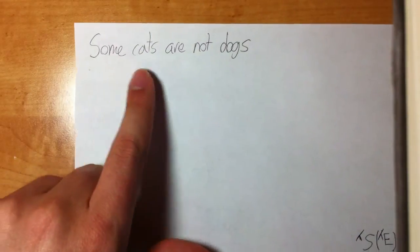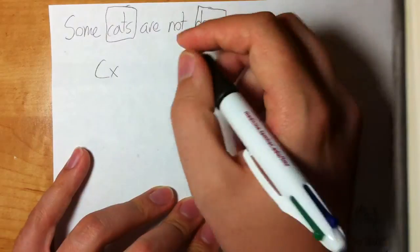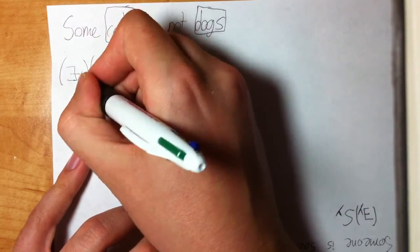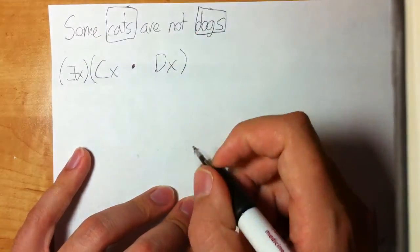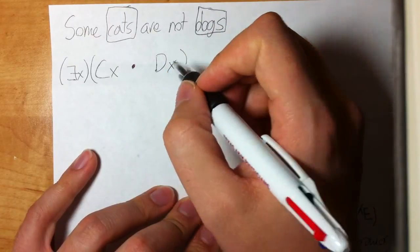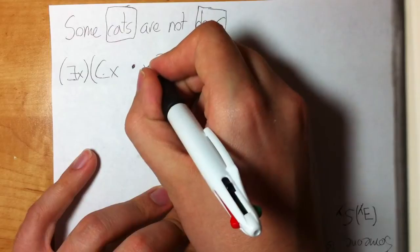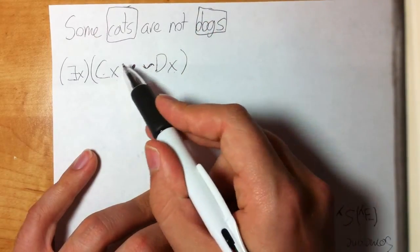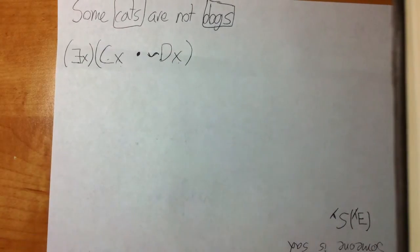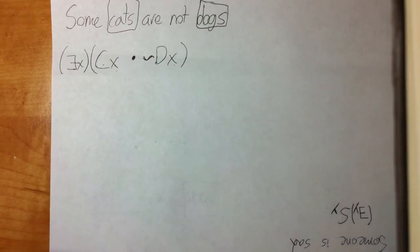The last example: 'Some cats are not dogs.' Same process — identify your predicates: Cx and Dx. I use the existential quantifier because we're talking about 'some.' I use a dot for the existential. Now I need to incorporate the 'not' — that's pretty self-explanatory: put a tilde in front of the D. So: ∃x(Cx · ~Dx) — something is a cat and something is not a dog at the same time. That's the O statement.